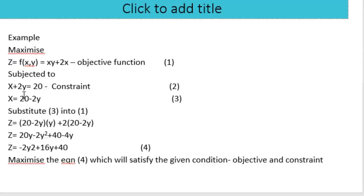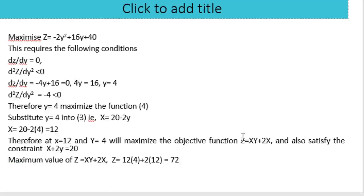In summary, the substitution method involves setting the constraint in terms of one variable, substituting that into the objective function, solving the resulting equation to get the value of one variable, then substituting back to find the other variable and the maximum value of the objective function.